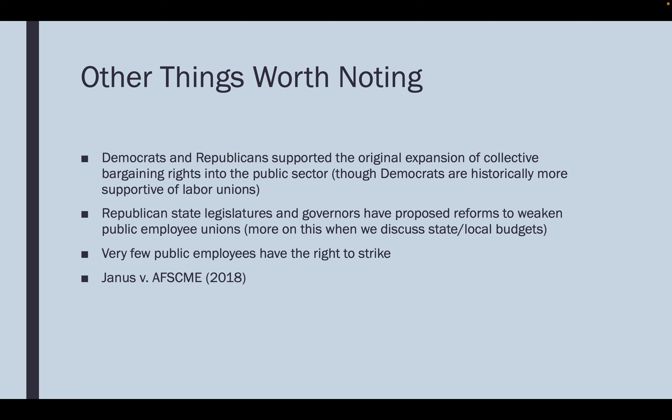There have been different reforms to try and weaken public employee unions, arguably to save money for state and local budgets. Also worth noting: very few public employees have the right to strike. When collective bargaining legislation was passed, it gave public employees the right to bargain at the table, but in return made striking much more costly. Most public safety employees do not have the right to strike, and other public employees face strict restrictions on the conditions under which they can strike.